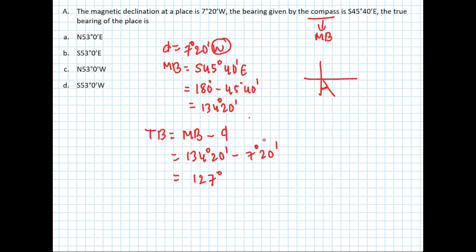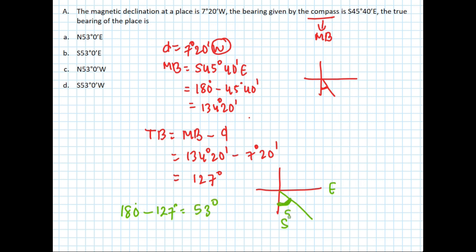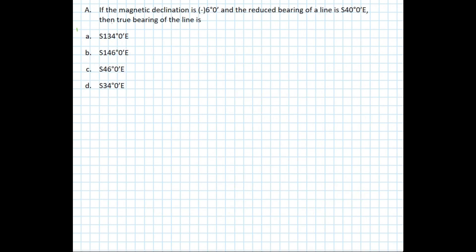To convert 127 degrees from whole circle bearing to quadrantal bearing system, we subtract from 180 degrees: 180 minus 127 degrees equals 53 degrees. Since 127 degrees lies in the south-east quadrant, the answer is south 53 degrees east.